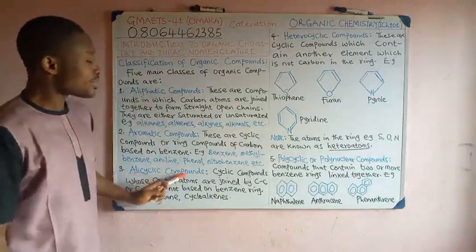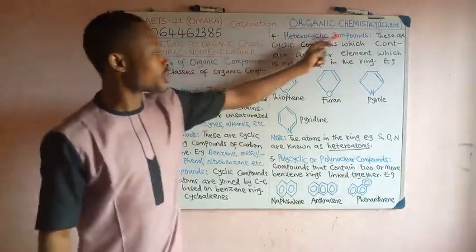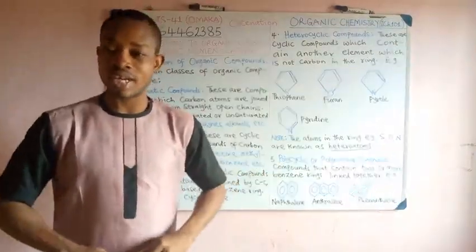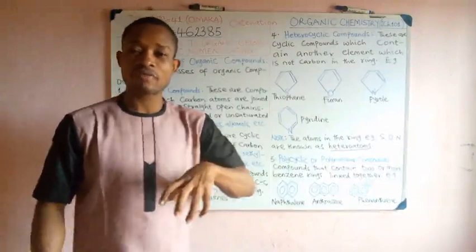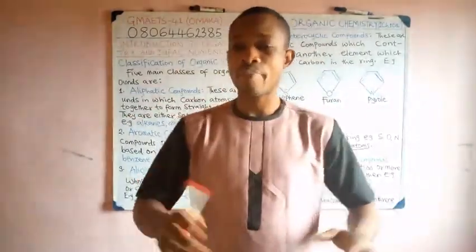These are the five classes. Aliphatic compounds, alicyclic compounds, aromatic compounds, heterocyclic compounds, and polycyclic or polynuclear compounds. Remember, the focus of this organic chemistry 1 is on aliphatic compounds.